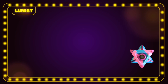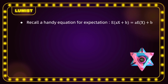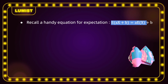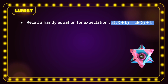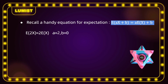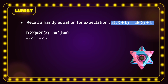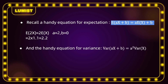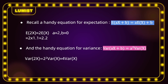Let's use what we've learned to find E[2x] and Var[2x]. Recall that E[ax + b] equals a times E[x] plus b. So E[2x] is just 2 times E[x], where a equals 2 and b equals 0. Since E[x] is 1.1, E[2x] equals 2 times 1.1, which is 2.2. And applying the variance property Var(ax + b) equals a squared times Var(x), we get Var(2x) equals 2 squared times Var(x), which is 4 times 0.39, equal to 1.56.